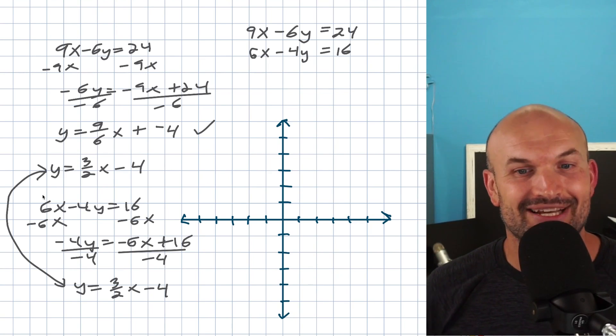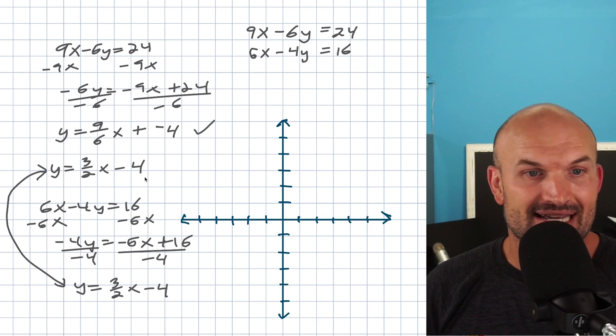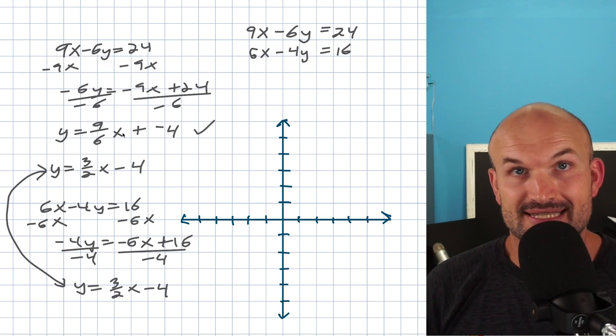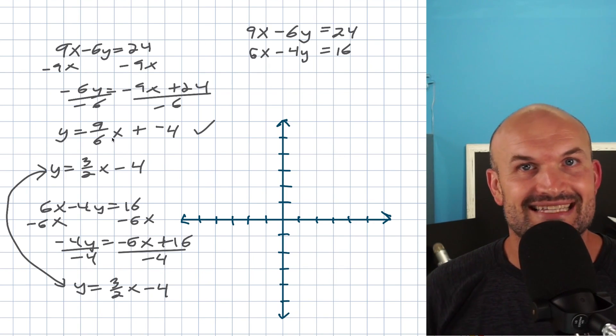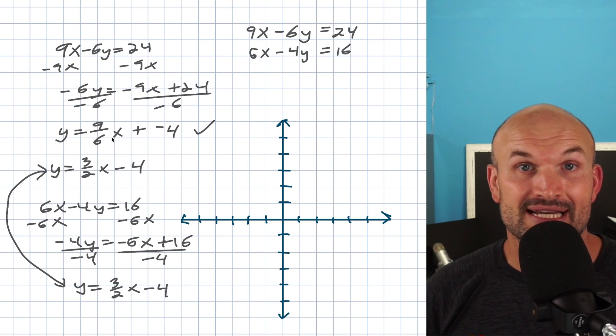It's really important to remember that whenever we have a system that's the exact same equation, we have what we call an inconsistent solution, meaning we have infinitely many solutions. The reason why is that the graphs are going to intersect each other infinitely many times because they're exactly on top of each other — so there are infinitely many intersection points.